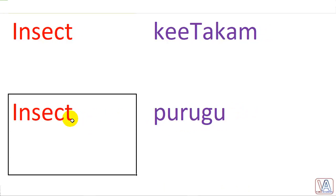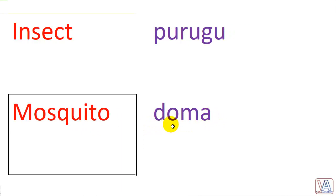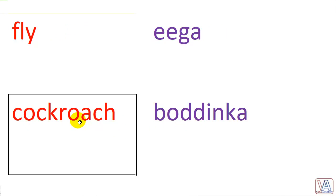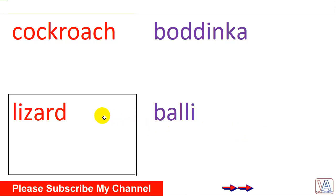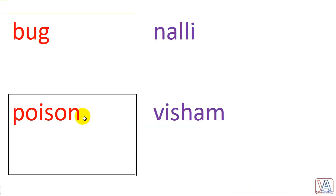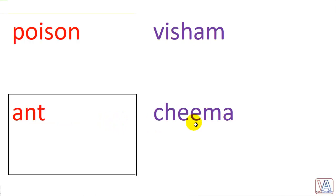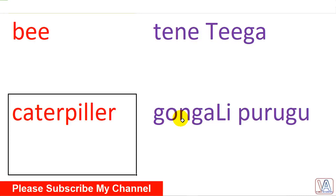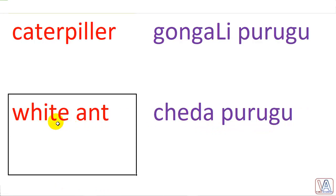Fly — eega. Cockroach — buddhinka. Lizard — balli. Bug — nally. Poison — visham. Ant — cheema. Bee — thena teega. Caterpillar — gongali purugu. White ant — chatha purugu.